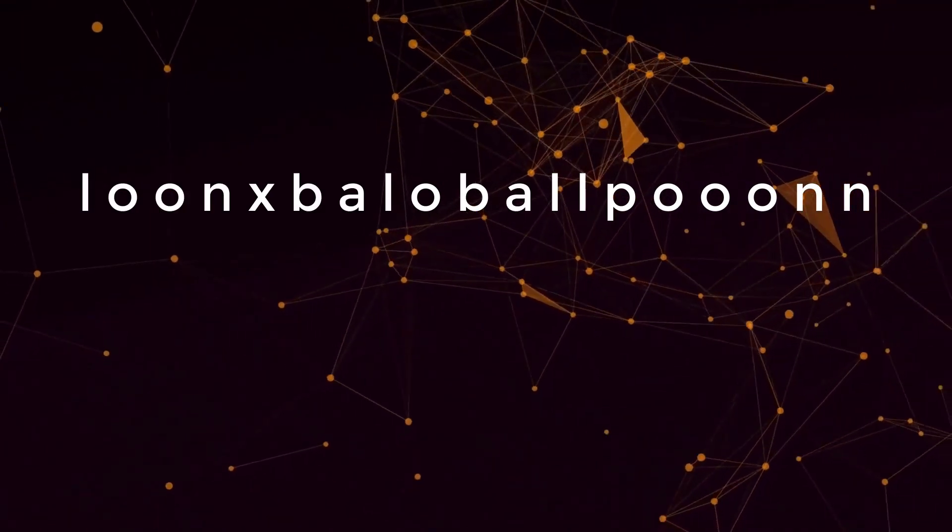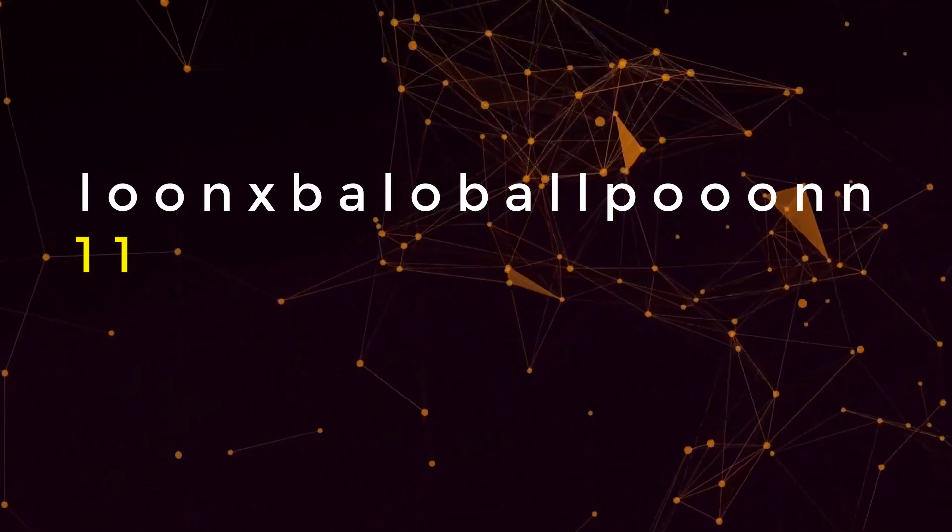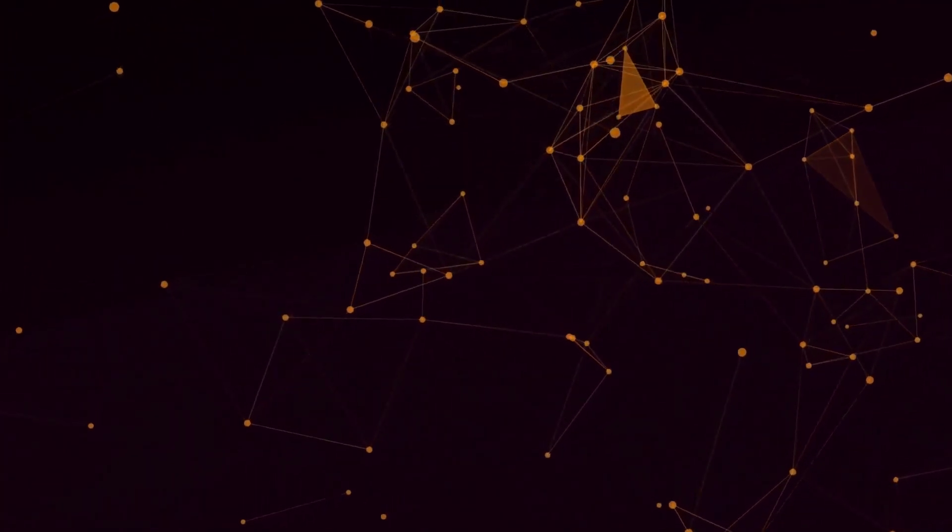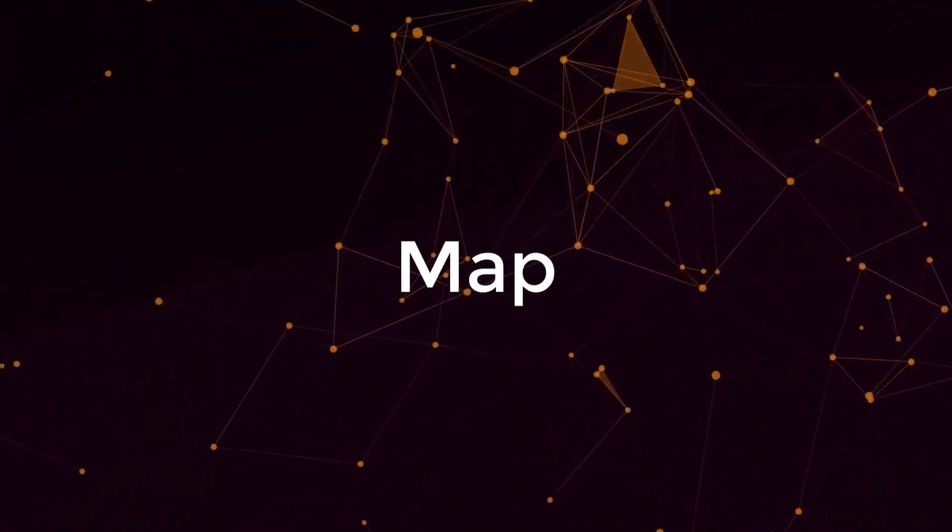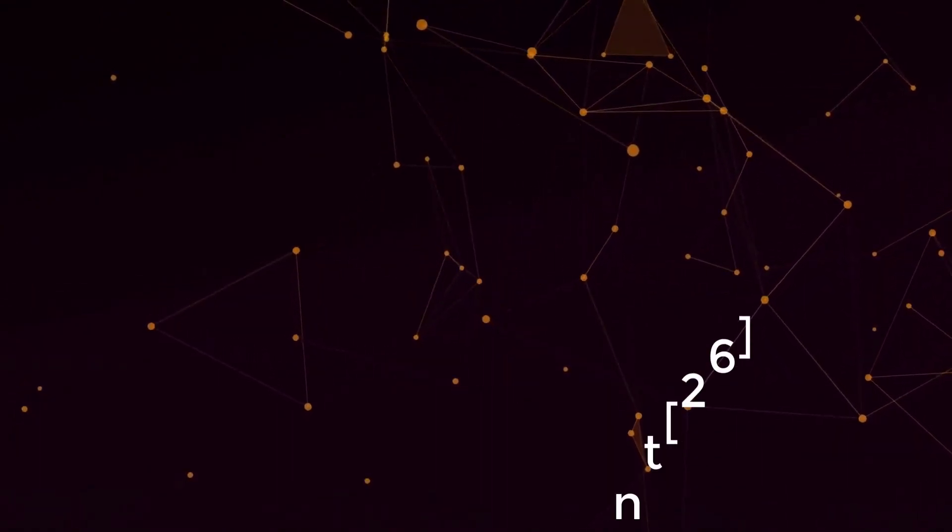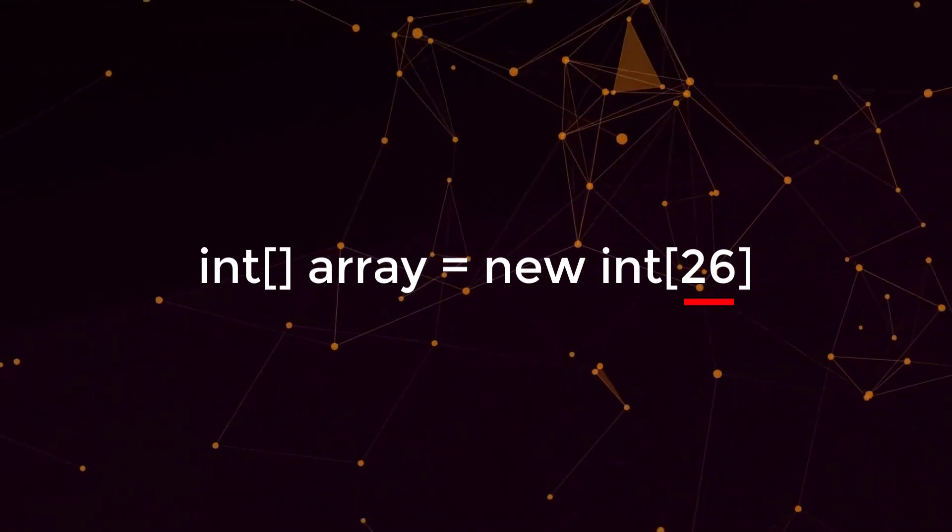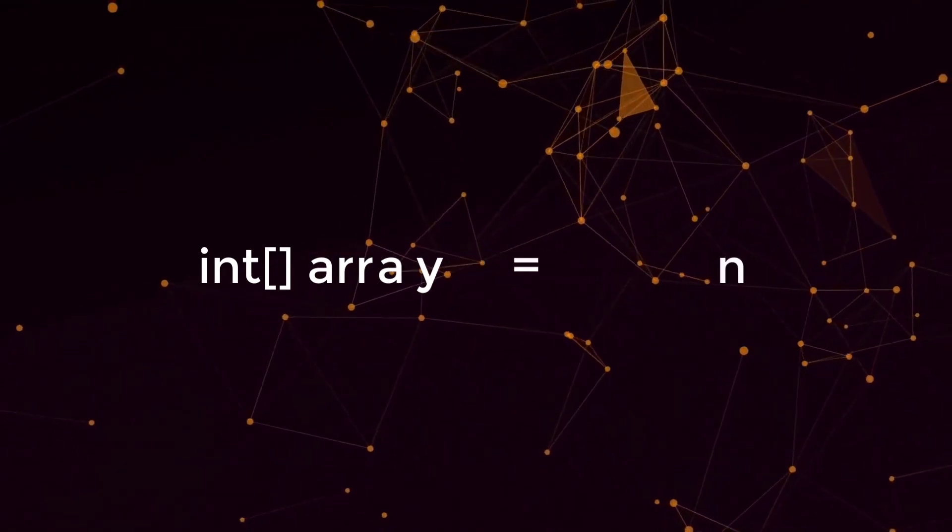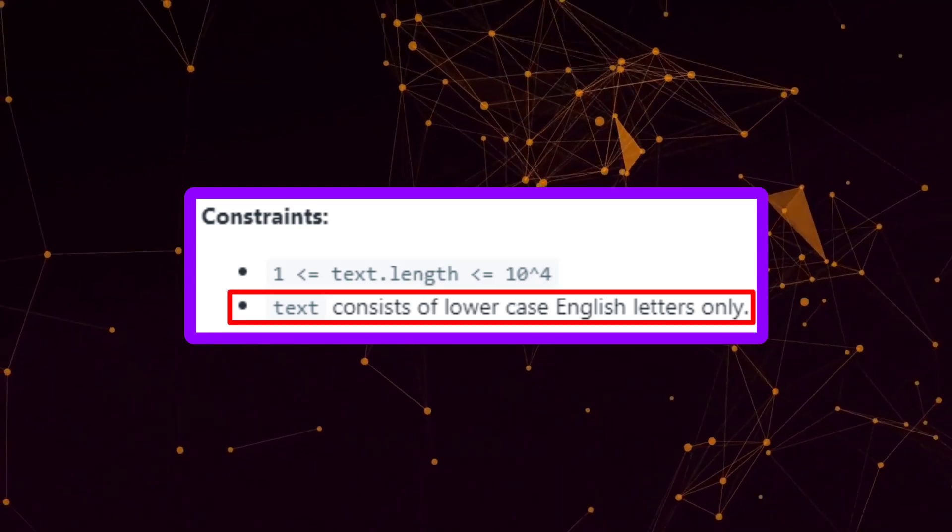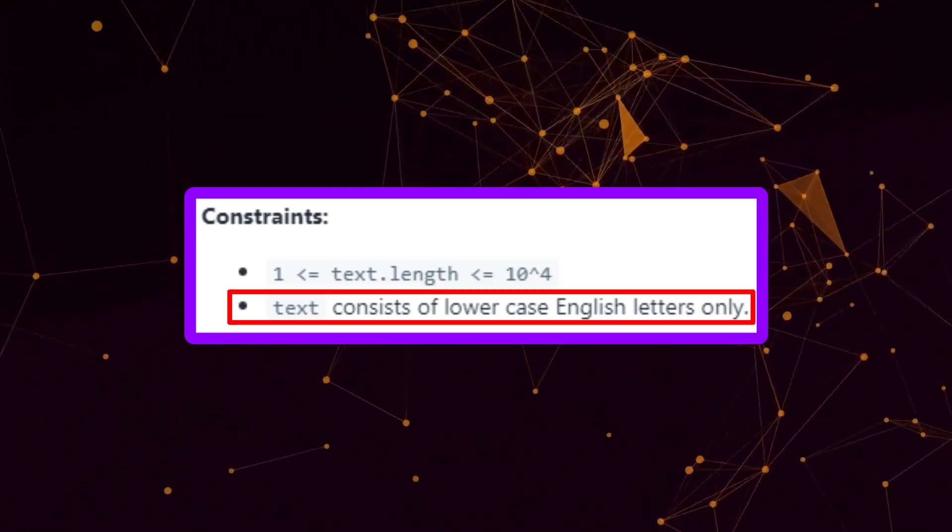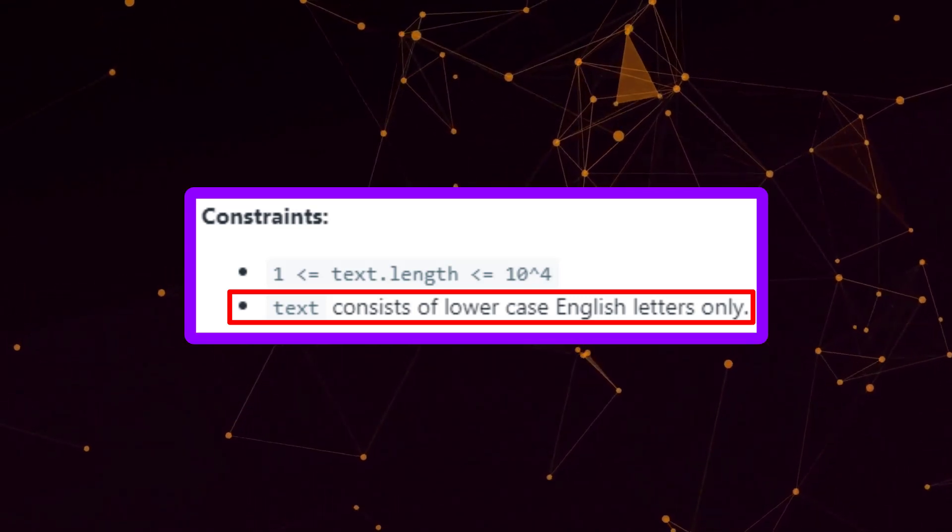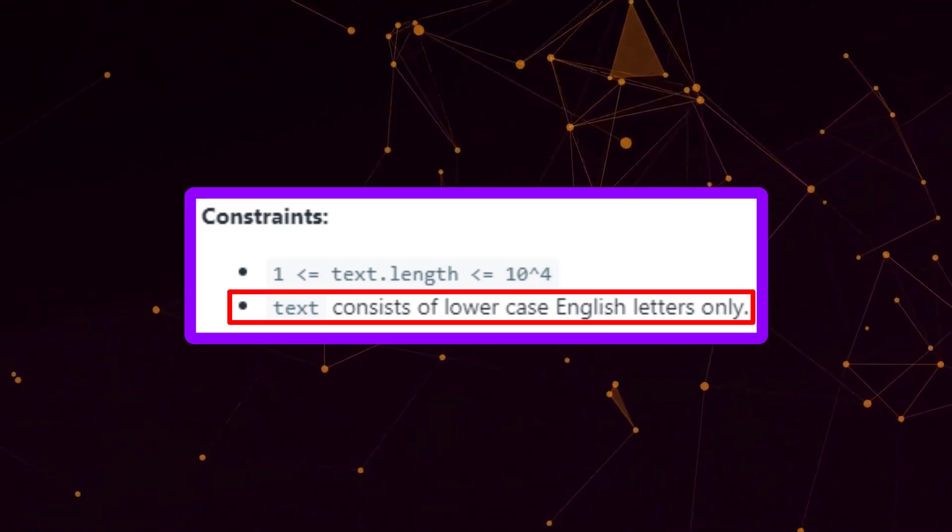So to solve this efficiently, we have to first count the number of occurrences of each letter in our string. So normally, you can use a map to do this, but there actually is an easier way. And that is just to have an integer array of size 26. Why 26? If we look back at our problem description, it says that text consists of lowercase English letters only.